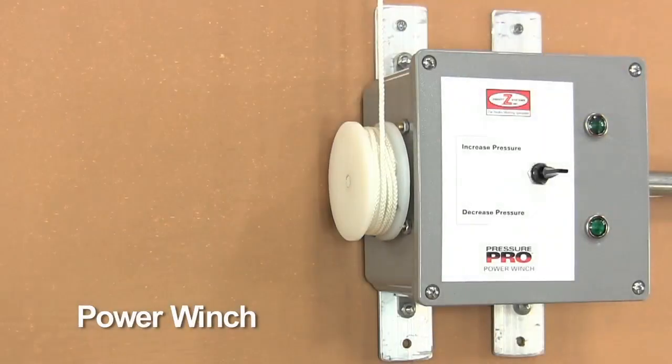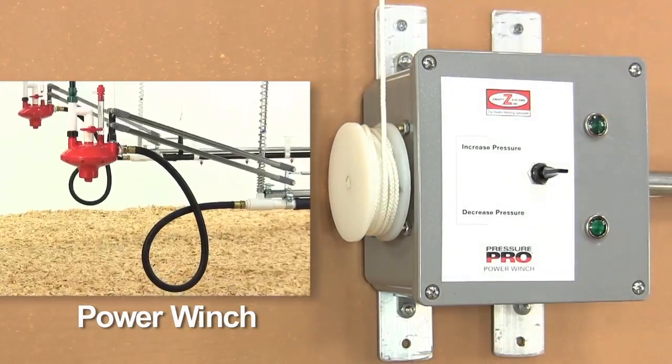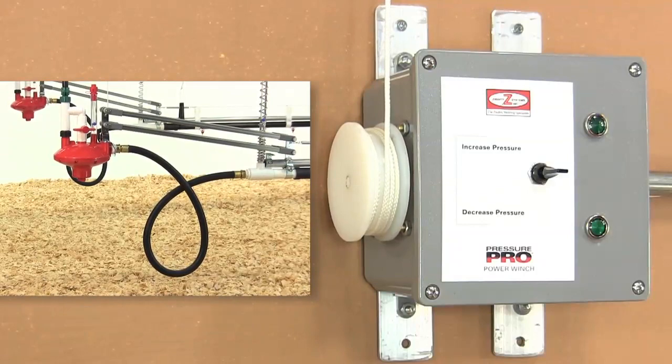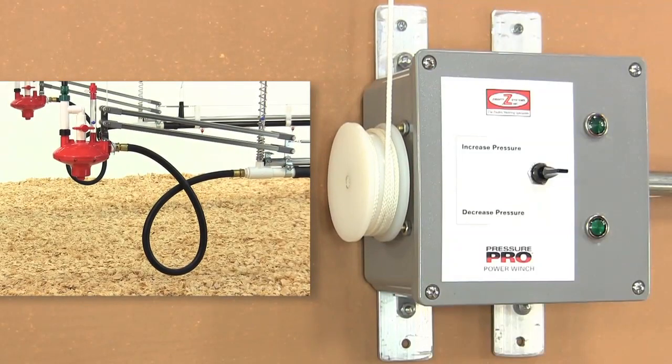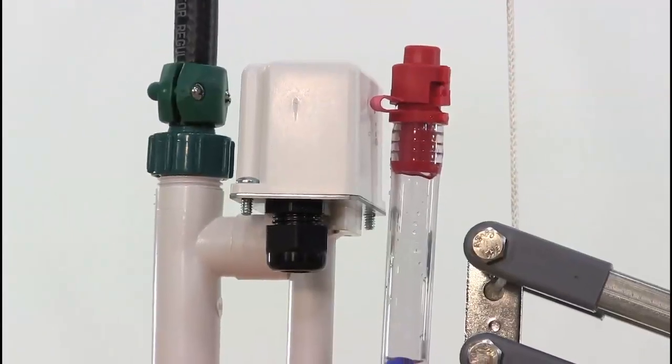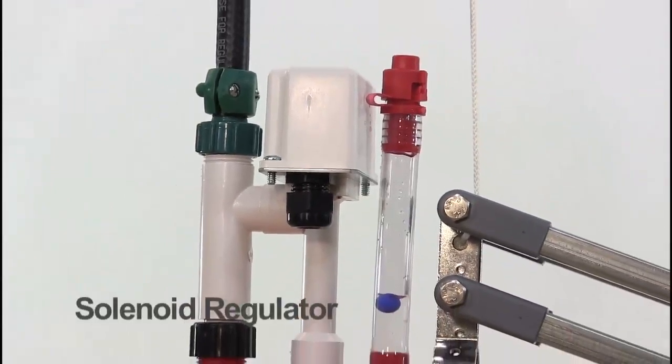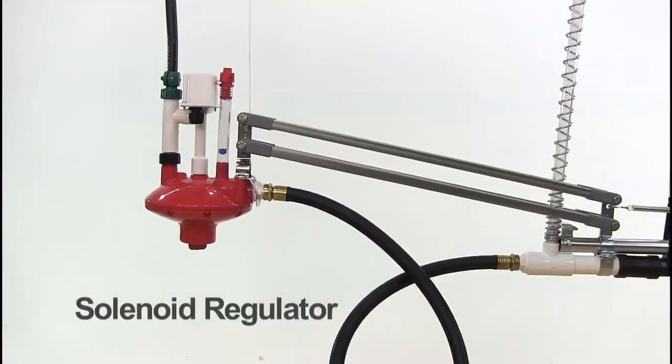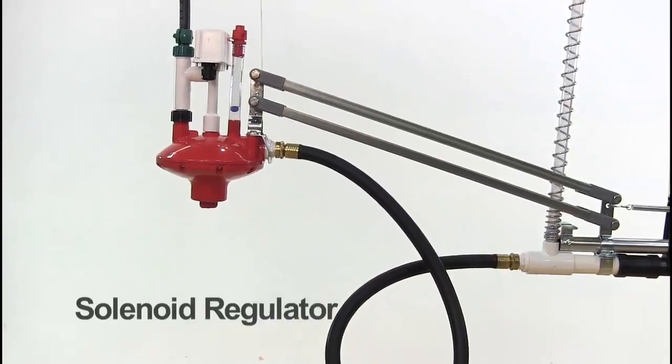Save even more time and effort with a motorized winch connected to a programmable whole house controller that makes all the pressure adjustments unattended. And for maximum time and labor efficiency, install Ziggity solenoid regulators on the Pressure Pro units for automatic, unattended system flushing.